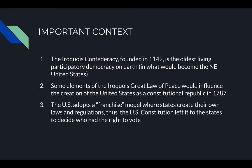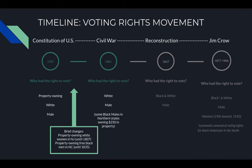A franchise model means that individuals can operate their particular store the way they want to underneath the authority of the franchise owner, giving those business owners more agency and flexibility. When you adopt a franchise model in government, it means that states have the opportunity to create their own laws and regulations. Thus, the U.S. Constitution left it to states to decide who had the right to vote. Around the time of the Constitution in 1787, the people who had the right to vote were property-owning, white, and male.